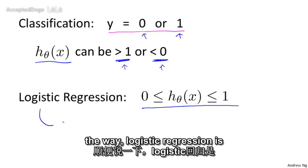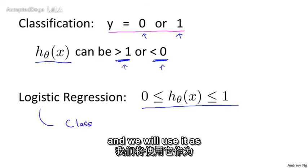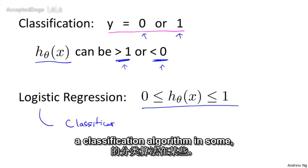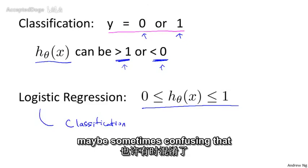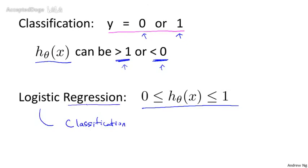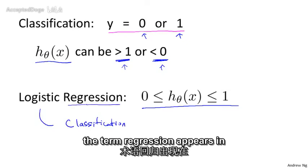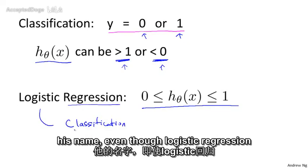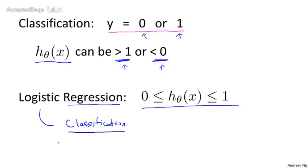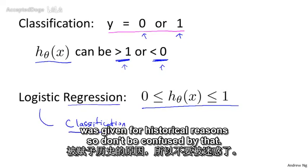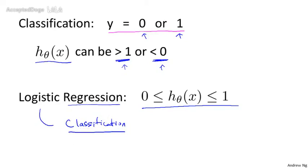So what we'll do in the next few videos is develop an algorithm called logistic regression, which has the property that the output, the predictions of logistic regression are always between zero and one and doesn't become bigger than one or become less than zero. And by the way, logistic regression is maybe sometimes confusing that the term regression appears in this name, even though logistic regression is actually a classification algorithm. But that's just the name it was given for historical reasons. So don't be confused by that.